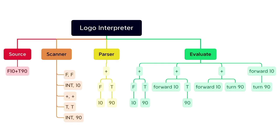Okay, let's take a look at Logo, our other language. We start with the source code, for instance F10+T90, which stands for forward 10 pixels and then turn 90 degrees. When we scan this, the first token has type F and value F.